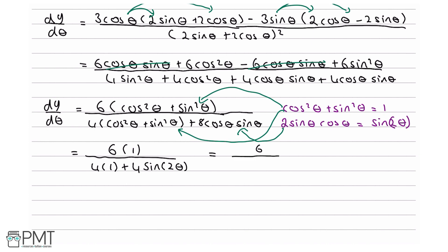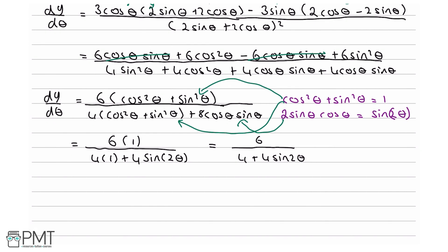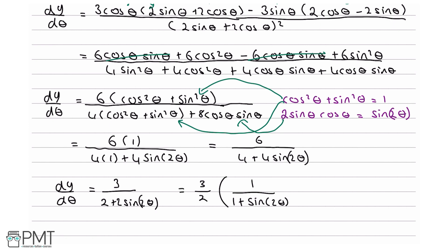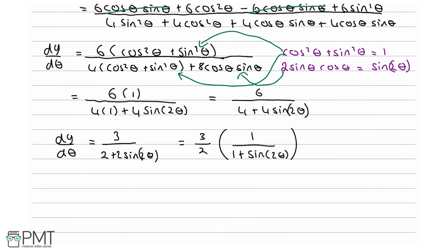So we can rewrite this as 6 over (4 plus 4 sine 2θ). Dividing both numerator and denominator by 2 gives 3 over (2 plus 2 sine 2θ). Taking 3/2 out as a factor gives dy/dθ equals (3/2) times 1 over (1 plus sine 2θ). Therefore, dy/dθ equals (3/2) divided by (1 plus sine 2θ).